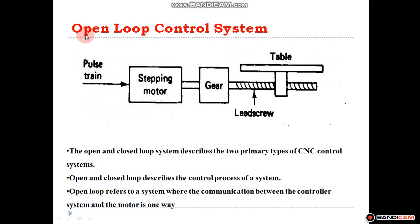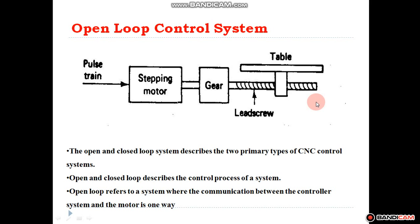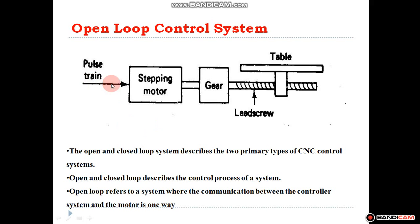According to the type of control system, the first is the open loop control system. In an open loop control system, the feedback element is absent. These systems are very low cost and are used where high accuracy is not critical. The accuracy of such systems depends upon the machining capability and life of the machine as well as the maintenance carried out. Such systems are mostly used in retrofitting machines, that is, conversion of old machines to CNC machines.